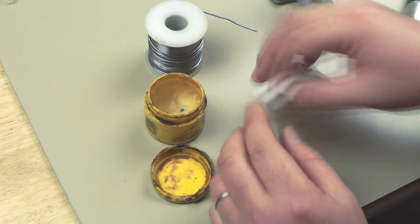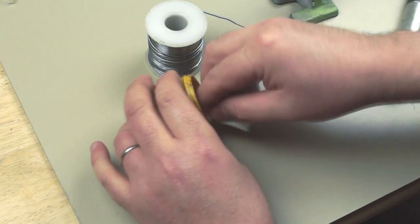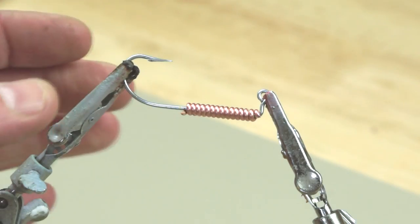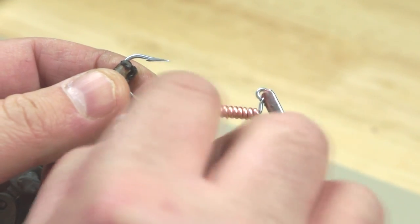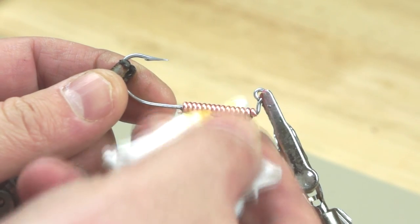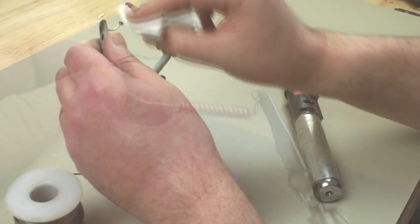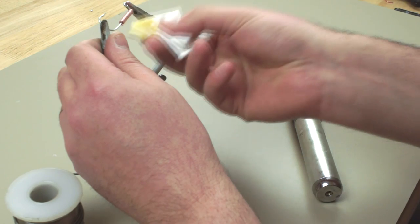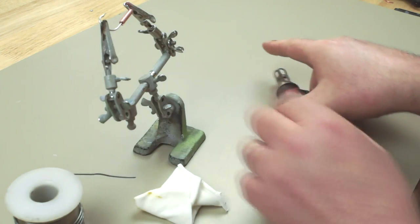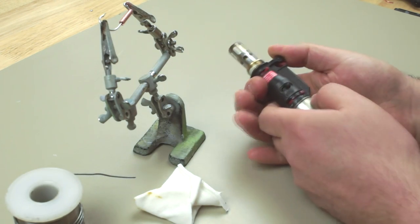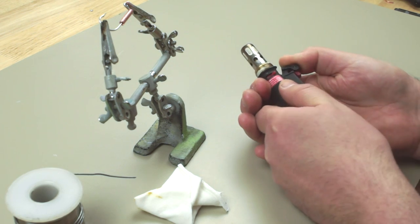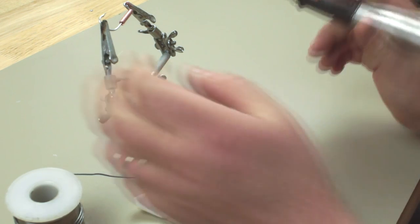First off with my rag, I'm just going to get a bit of flux and then work that into my copper just to get a nice light coat over. Then once I'm happy with that, I can crank up the old blow lamp and get a bit of heat going.